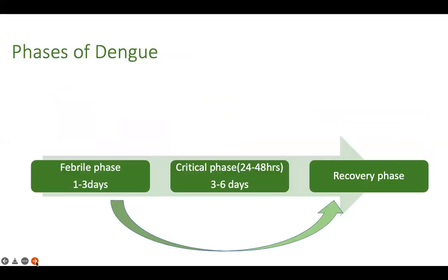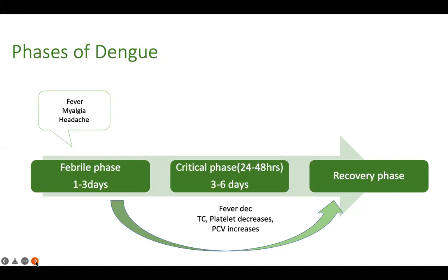Symptomatic dengue classically has three phases: febrile, critical, and recovery. The febrile phase lasts one to three days and behaves like any other viral fever. The critical phase is characterized by subsidence of fever — paradoxically, as fever comes down, the platelet count and total count decrease while PCV increases, and the child begins developing warning signs, then shock, then hemorrhage.